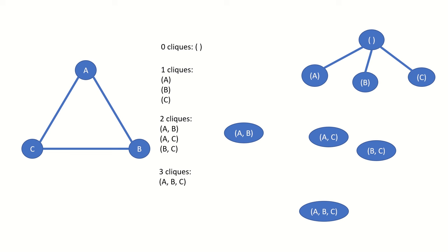Each simplex vertex corresponding to a one-clique will be connected to two two-cliques. For example, the simplex vertex for one-clique A will connect to the vertices corresponding to two-clique A-B and two-clique A-C. Applying the same logic, one-clique B connects to two-cliques B-C and A-B, and one-clique C connects to two-cliques B-C and A-C.